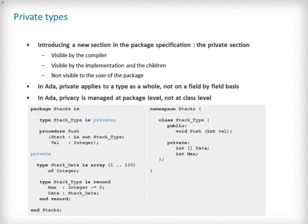To address this issue, the package specification can have a private section that is visible to the compiler, the implementation and any children. It is, however, not visible to the user of the package. You may be familiar with C++ and its concept of the private keyword in a class definition.